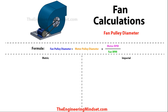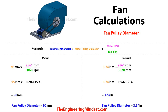The first calculation is the fan pulley diameter. The screen is split into metric and imperial calculations. The formula is: fan pulley diameter = motor pulley diameter × (motor RPM ÷ fan RPM). We have some data in the calculations here — you can get these figures from the manufacturer, or look them up online if you haven't already purchased the equipment.